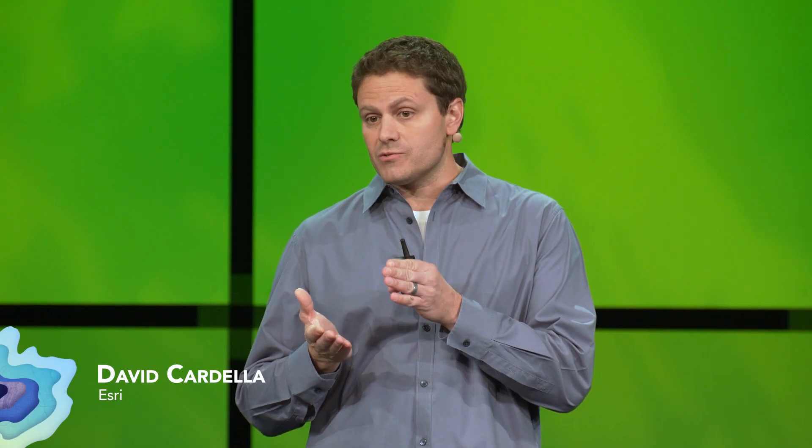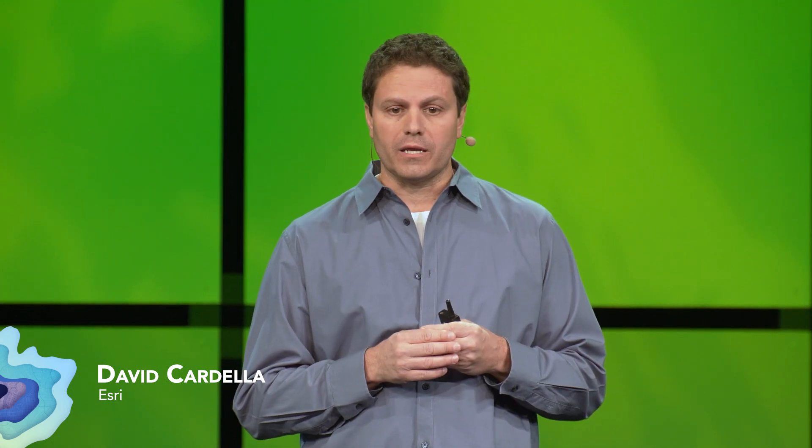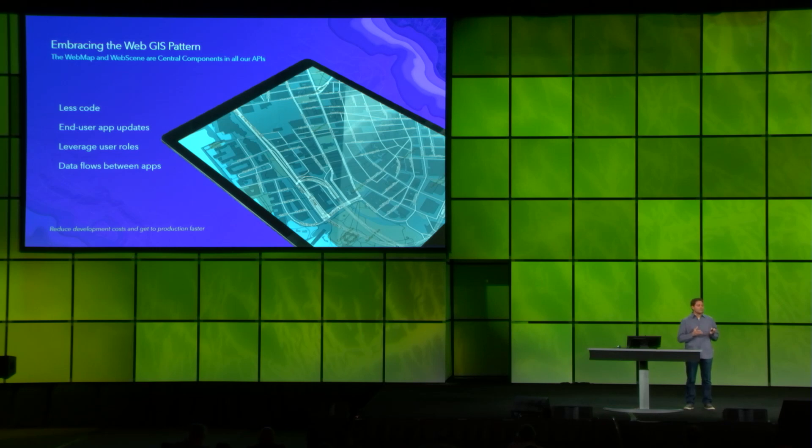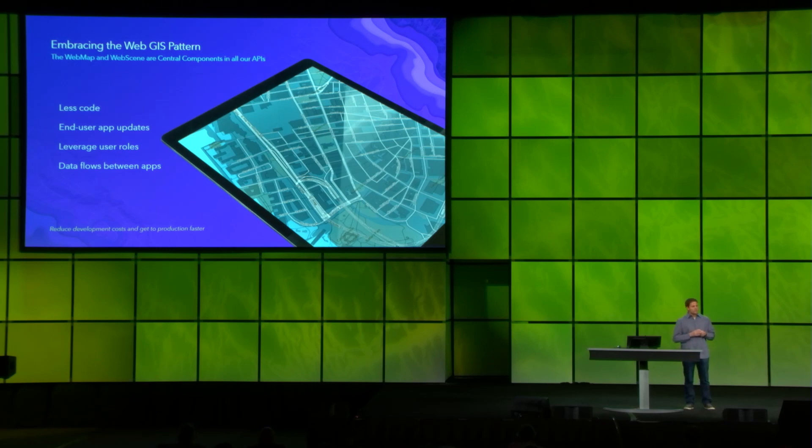Most custom applications are built to access services directly. This means the code is written to get at rendering and symbology information, pop-ups, as well as any other capabilities that are exposed through the service. This means quite a bit of development in some cases. All of our APIs embrace the web GIS pattern, meaning the web map and the web scene are the central component of all of our APIs. Our applications use this pattern, and I'm encouraging you to do the same.